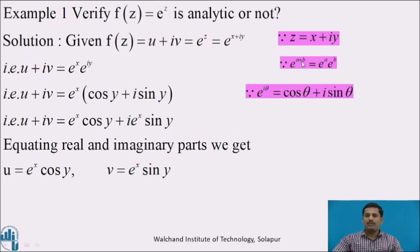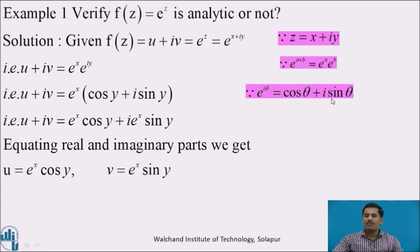We know the property of exponentials that e^(a+b) = e^a · e^b. Using this identity, e^(x+iy) = e^x · e^(iy). We also know that e^(iθ) can be written in complex form as cos θ + i sin θ. Applying this result for e^(iy), we get e^x · (cos y + i sin y).